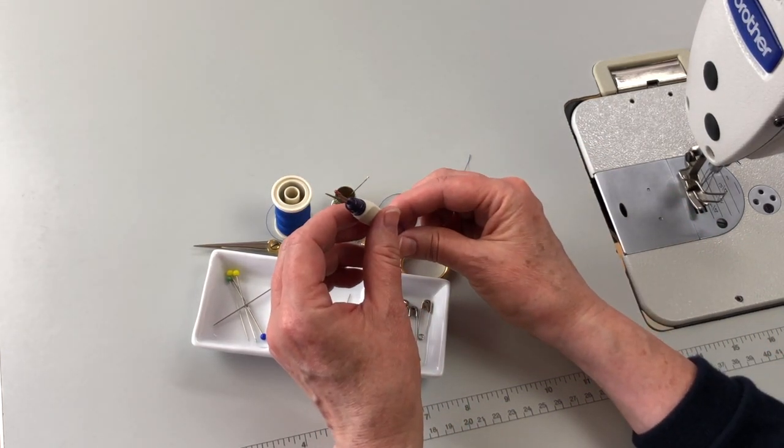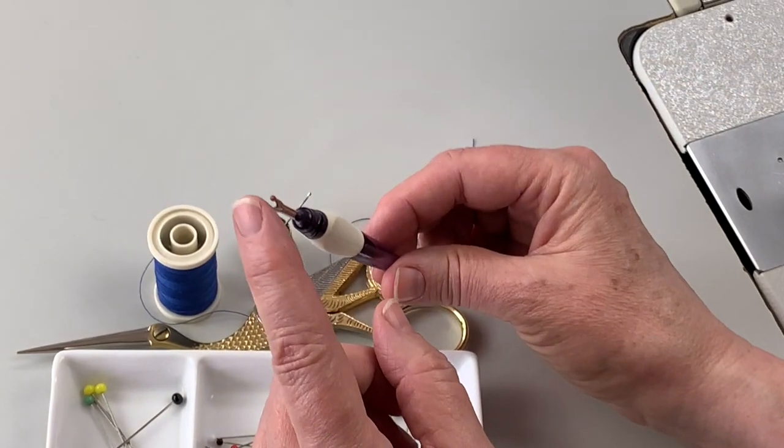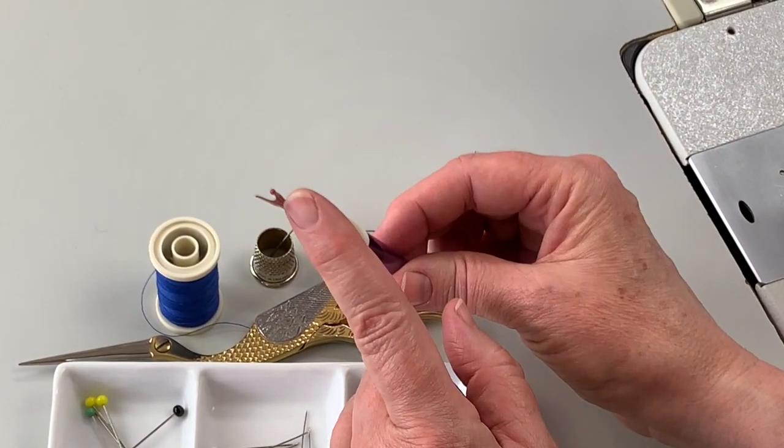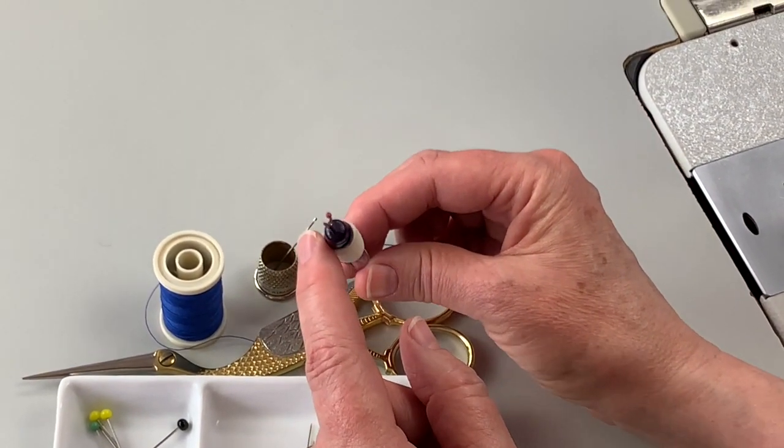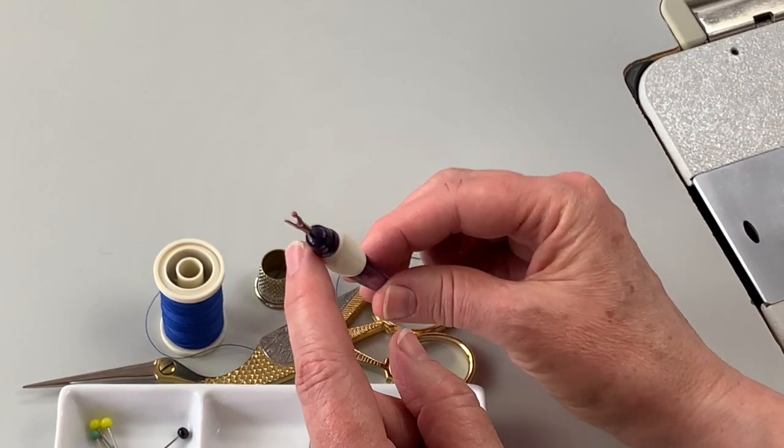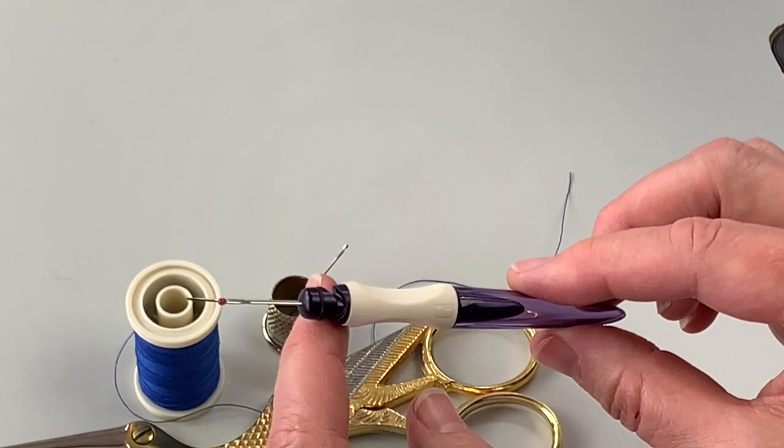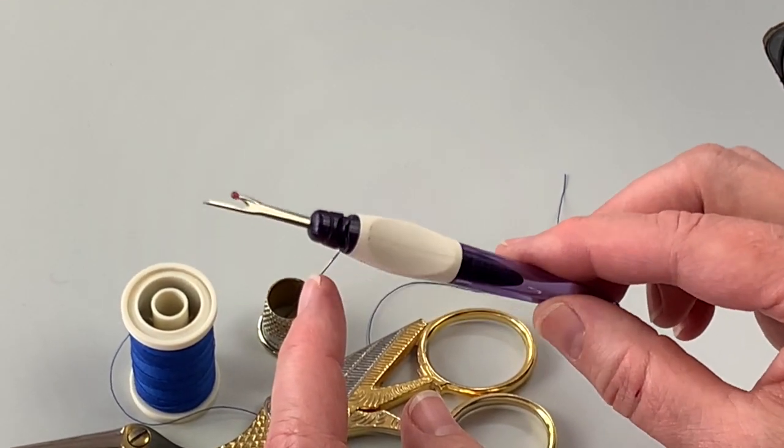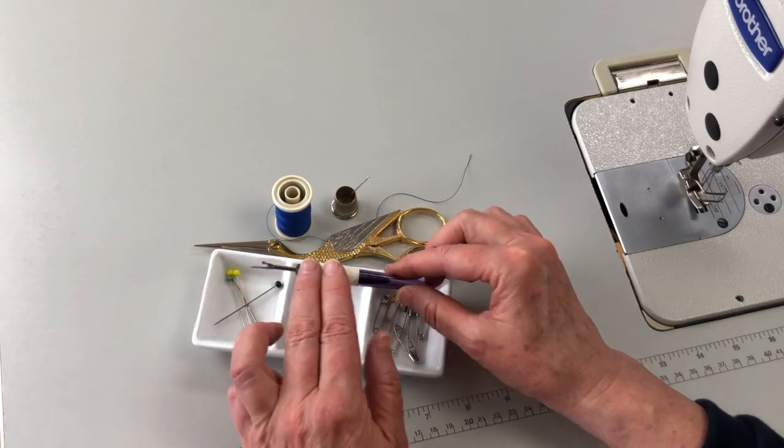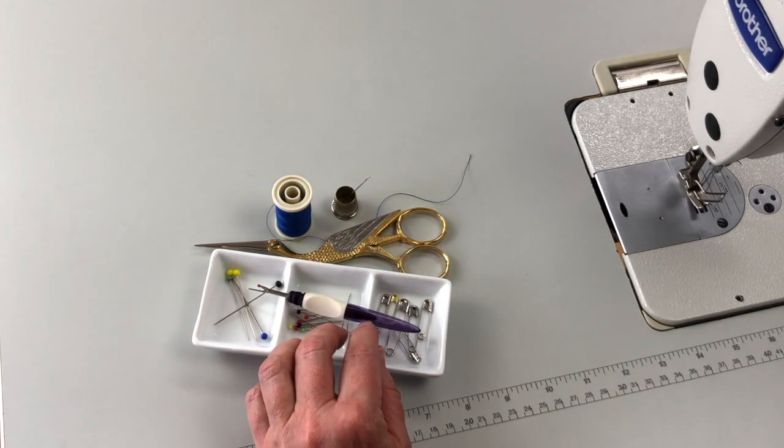A seam ripper is a very good tool to have as well. And if you see here, there's a very long curved edge here, very sharp, and that is very good for taking seams apart, and a very sharp point for isolating and unpicking threads. You have to be very careful with this, though, that you don't cut the fabric by accident.